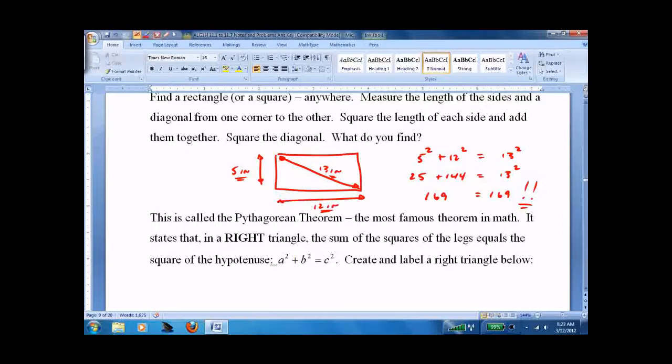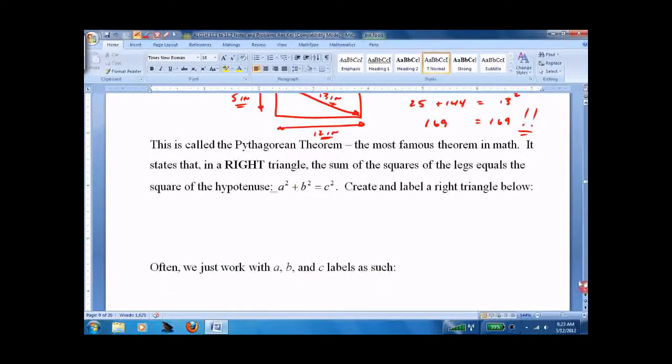It states, in a right triangle, meaning it has a 90 degree angle, if one of the legs called a and another one of the legs called b are squared and added together you will get the hypotenuse squared. How do you know which one is hypotenuse? It is the one that's across from the right angle. The legs are the other two, they touch the right angle here and here.